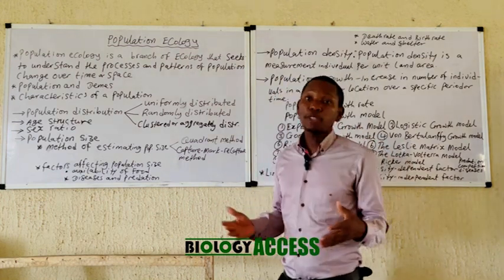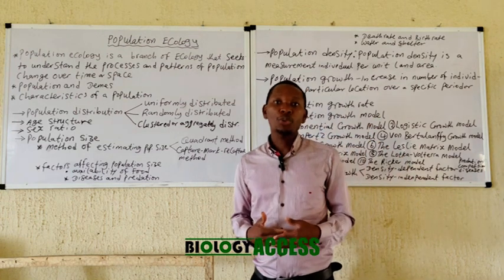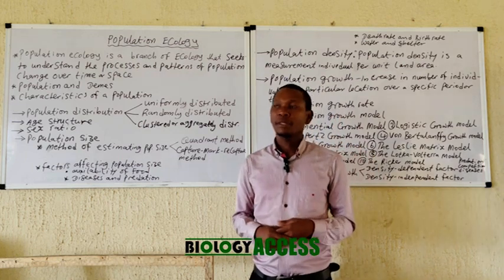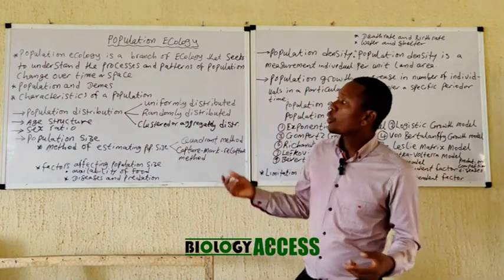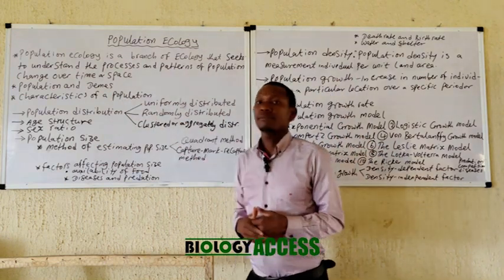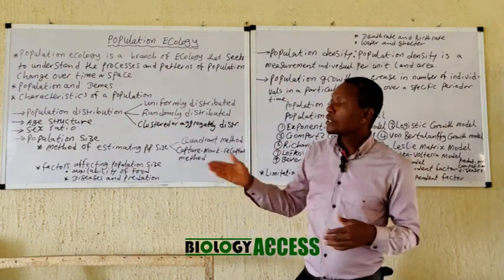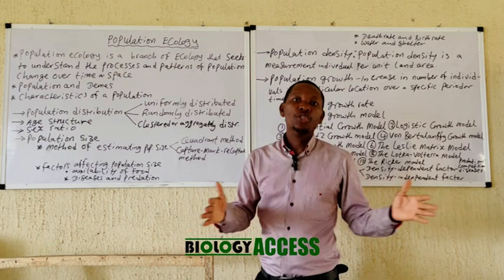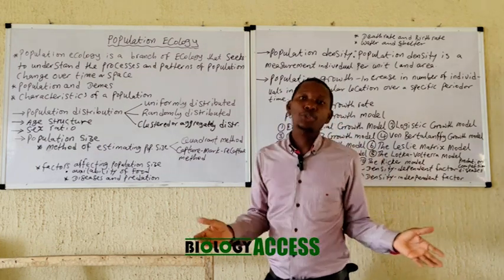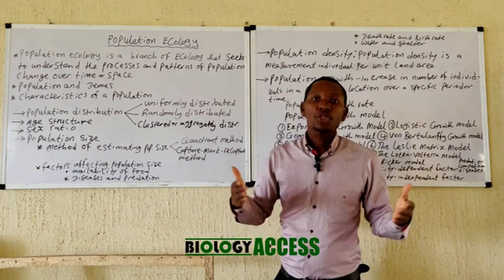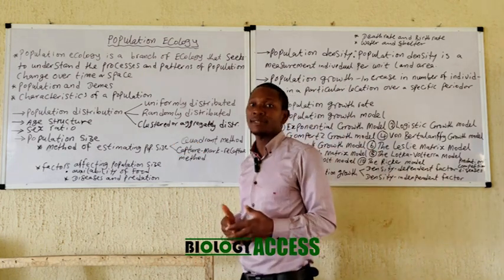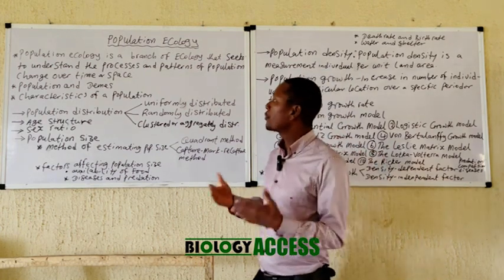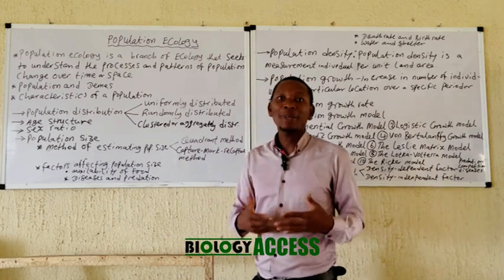What is population? Population is the number of individuals of a particular species that can interbreed in a particular geographical area. In some cases, you hear of the term 'deme.' A deme is actually a subpopulation — a population can be in a large area and divided into subpopulations with unique features that can interbreed.